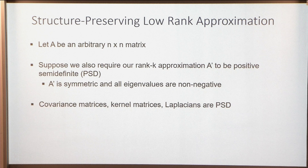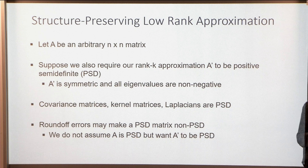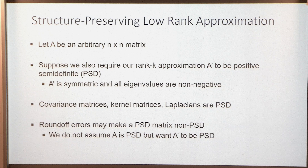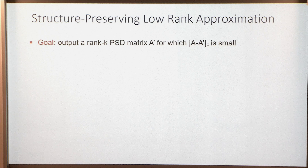Your matrix A that you want to approximate might not itself be PSD — maybe it was supposed to be, but because of round-off errors it turned out not to be. Still, knowing it should be PSD, you want your low-rank approximation A' itself to be PSD. The goal is to output a rank-K PSD matrix A' for which the Frobenius norm of A minus A' is small.